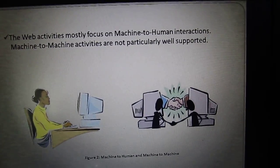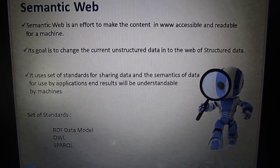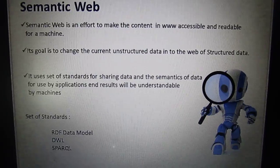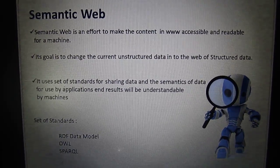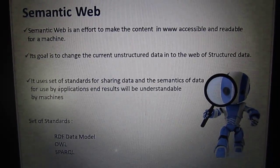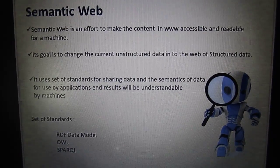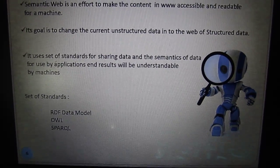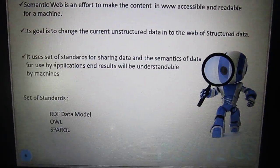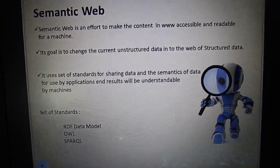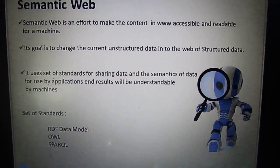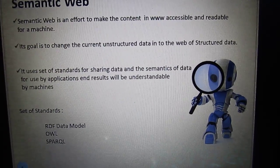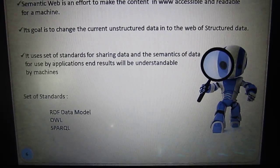The word 'Semantic' itself implies meaning and information. The main aim of Semantic Web is to make content on the worldwide web accessible and readable for a machine. For example, if a computer searches for a book from a web page by parsing it, it cannot tell whether the web page is for a book site or any other, who has written it, or how this data is related to previous versions. Semantic Web answers all these questions by making relationships between data, changing unstructured data into a web of structured data so that it can be used by applications and end results will be understandable by machines.